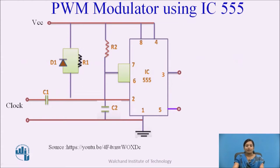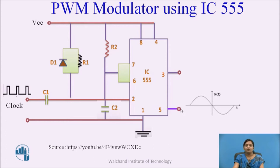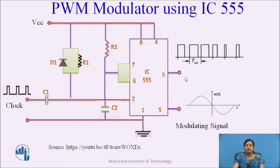This is the circuit diagram for the PWM modulator using IC555. The clock signal is applied at pin number 2 of the IC555. Another input to this circuit is x(t), the continuous time signal or modulating signal, and we get the output — the PWM signal — at pin number 3 of this IC.